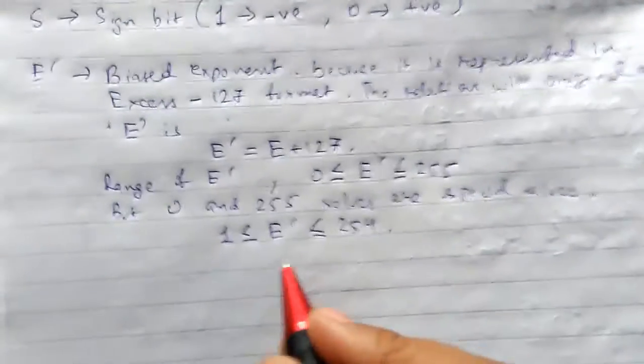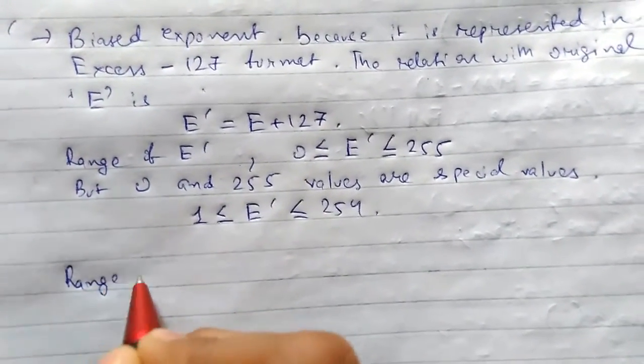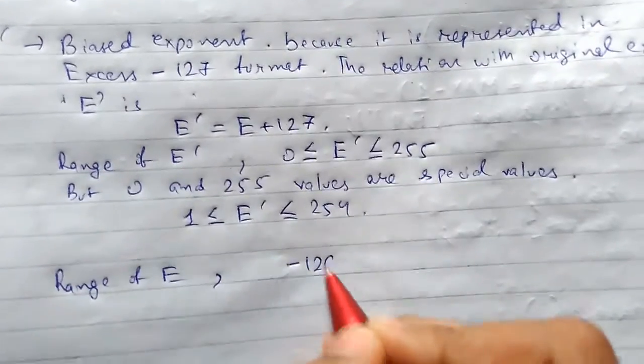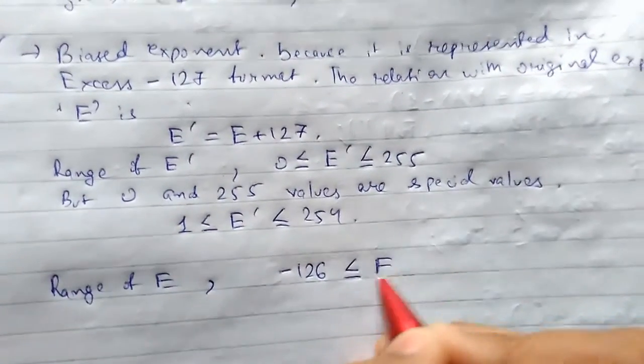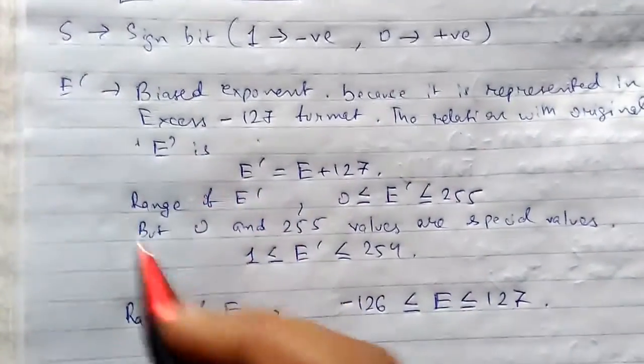Similarly, if we find the range of E, it will be minus 126 less than or equal to E less than 127. So this is all about biased exponent.